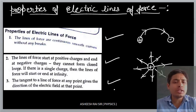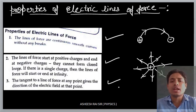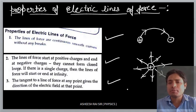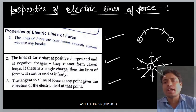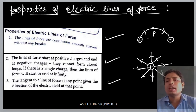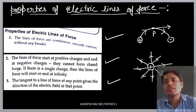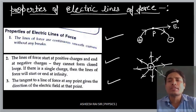Third property: the tangent to a line of force at any point gives the direction of the electric field at that point. Suppose the electric field line is curved and we want to know the direction of the electric field at point P. In that case, we draw the tangent at point P, and this tangent gives the direction of the electric field at point P.